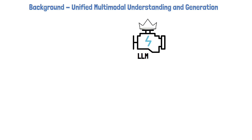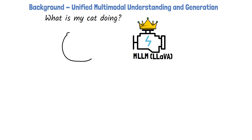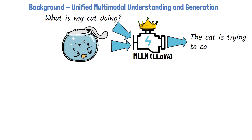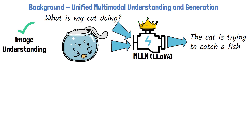Large language models have demonstrated remarkable capabilities in many tasks. Building on that, multimodal large language models such as LLaVA have been created. With multimodal large language models, we can feed the models both a text prompt and an image. For example, we can ask the model what is my cat doing and add an image of a cat. The model can then understand both the text prompt and the image, and tell us that the cat is trying to catch a fish. This approach has proven quite effective for image understanding tasks, where the model can assist with answering various types of questions about an input image.